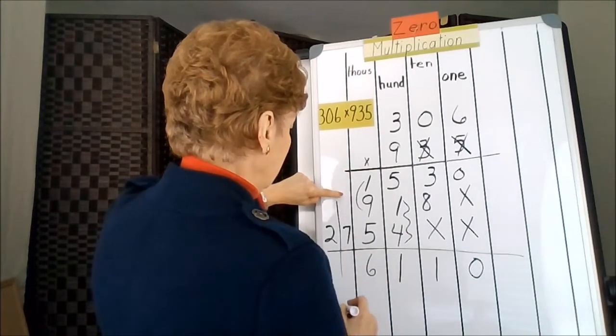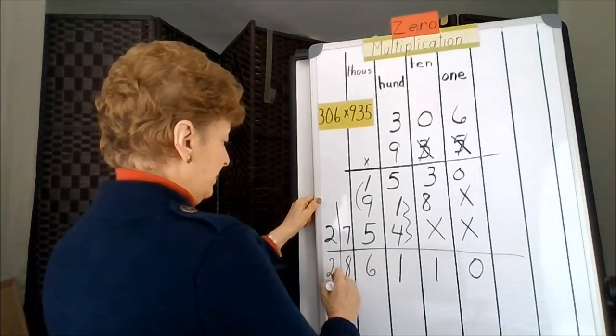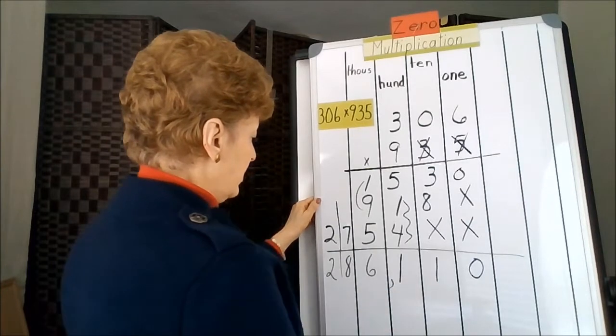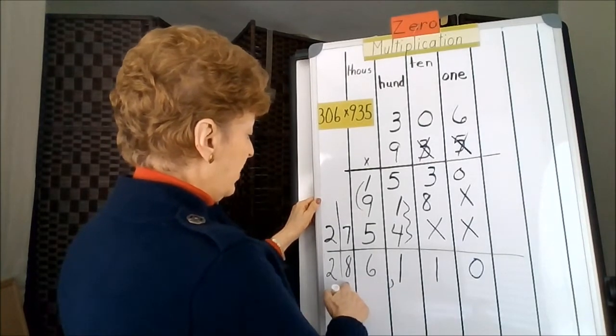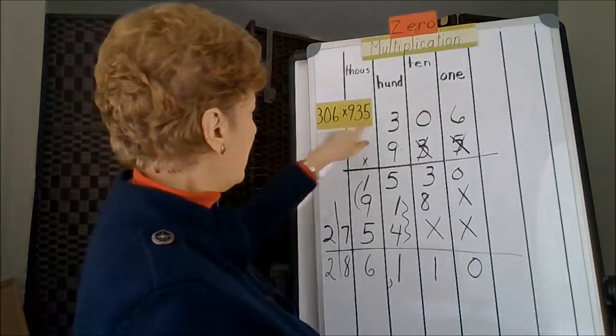1 and 7 is 8. And 2 is a copy job. The answer is 286,110. 0 in the middle.